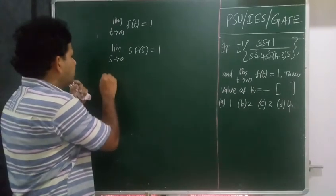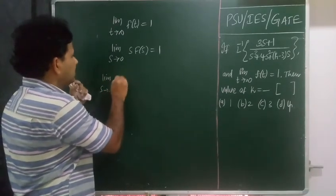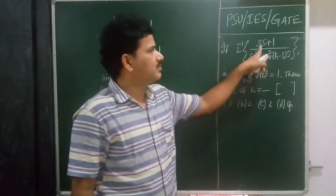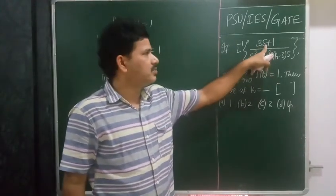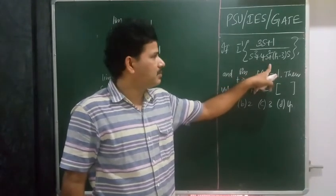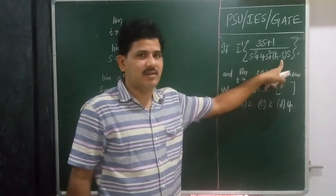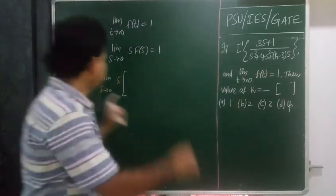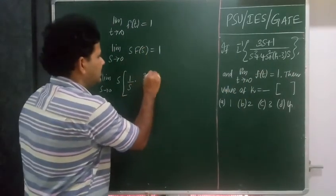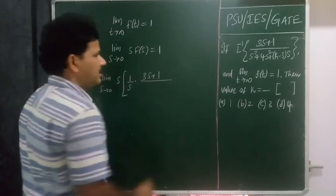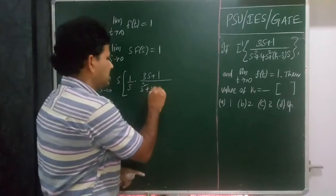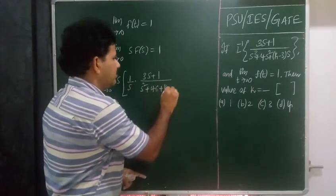Limit s approaches 0, s times of what is function f of s? Here the function f of s has a numerator and a denominator. In the denominator one common factor is s among all terms, so 1 over s times 3s plus 1 over s square plus 4s plus k minus 3.